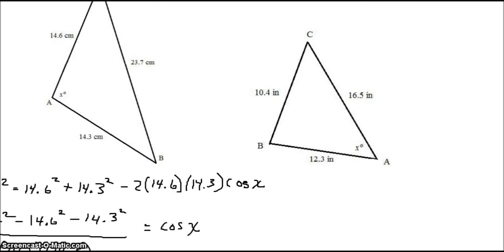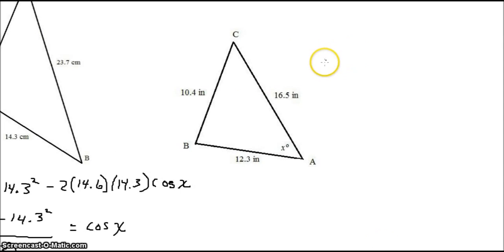Okay, and let's do something similar with this triangle. 10.4 squared will equal 16.5 squared plus 12.3 squared minus 2 times 16.5 times 12.3 cosine of X.